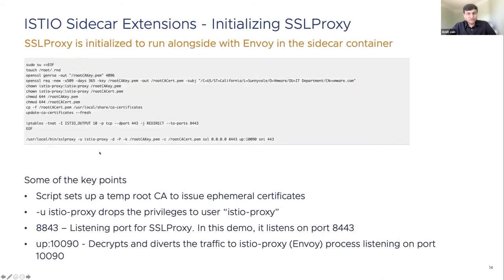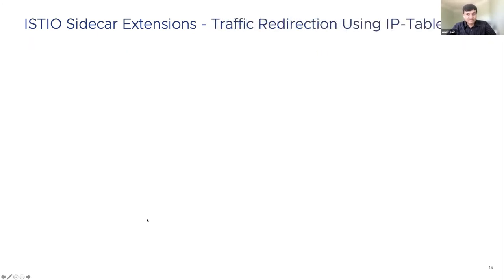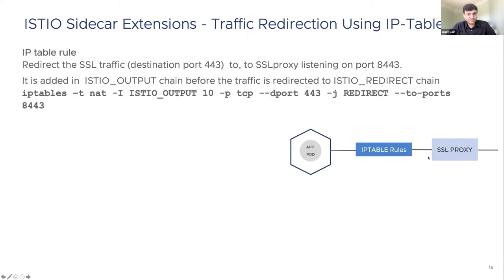The initialization script is a standalone script performing two steps: it creates a temporary root CA certificate for each pod, and then initializes SSL proxy inside the sidecar. Key parameters provide basic configurations such as listening port and the user ID for the SSL proxy process. For redirecting application TLS traffic to SSL proxy, a new IP table rule is added in the Istio output chain before traffic is redirected to the Istio redirect chain.